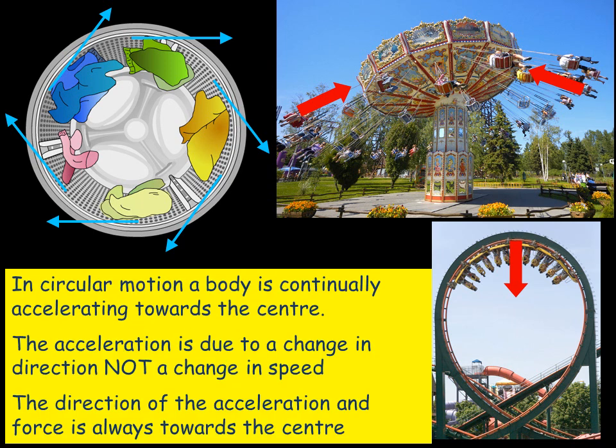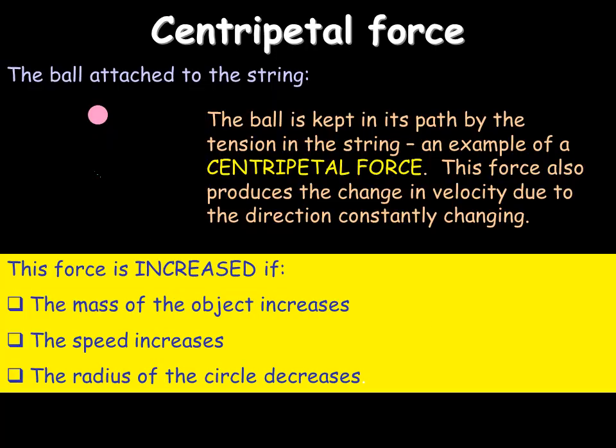In circular motion, the body is continually accelerating, which is quite strange because there is no change in speed. The acceleration is due to a change in direction. The direction of the acceleration and the force is always towards the centre. If that force wasn't there, then the bodies would fly off in a straight line outward.